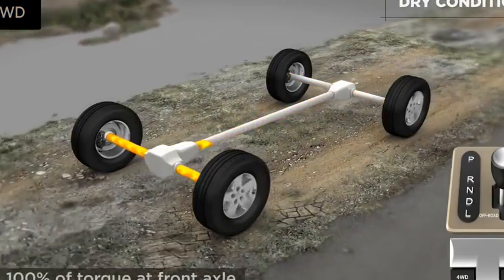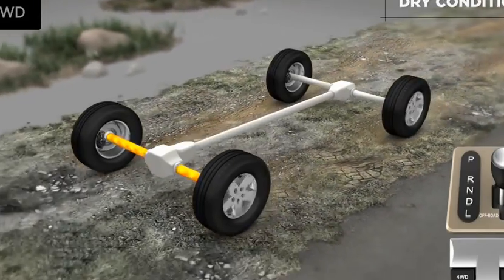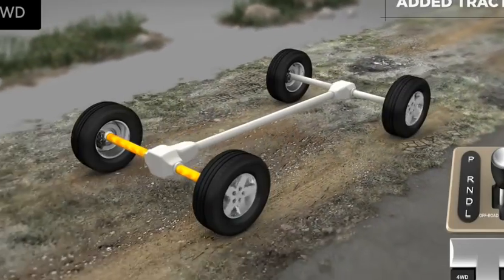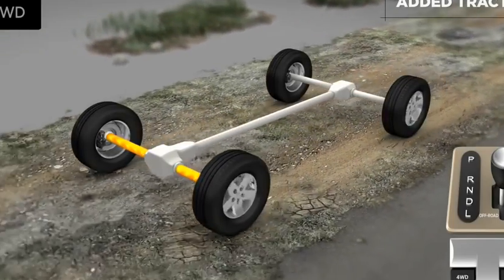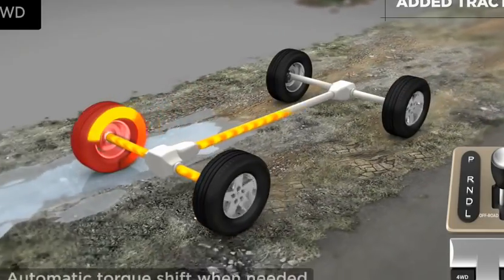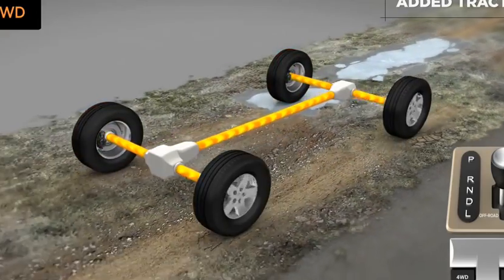In dry conditions, all power is directed to the front wheels, which reduces power-robbing friction and minimizes fuel drain. When the system anticipates a need for added traction due to rapid acceleration, tight turns, or wheel slippage, the engine's power is sent immediately to the rear wheels for added stability and control.